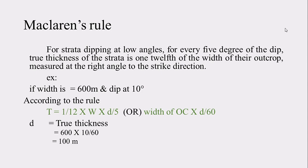The width measurement should be at right angles to the strike direction. So for every 5 degrees of dip, the true thickness of the strata will be one-twelfth of the width of the outcrop. You should know the dip amount and also the width of the outcrop measured at right angles to the strike. If you know these two things, by simply applying McLaren's Rule you can calculate the true thickness of the strata.